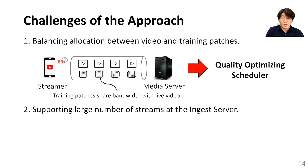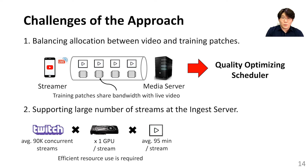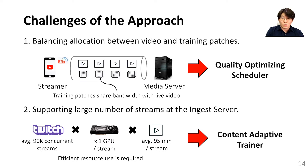Second, the ingest server must support a large number of streams. For example, there are on average 90,000 concurrent streams on Twitch. If we naively dedicate one GPU for online training to each stream, LiveNAS can only provide the benefit of online training to a limited number of concurrent streams. Therefore, efficient resource use for online training is required. To address this challenge, we introduce the content-adapted trainer.